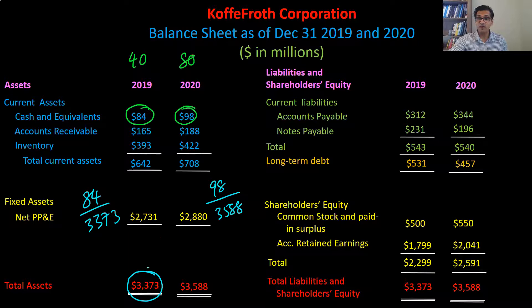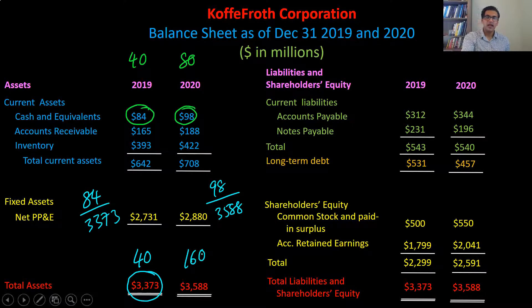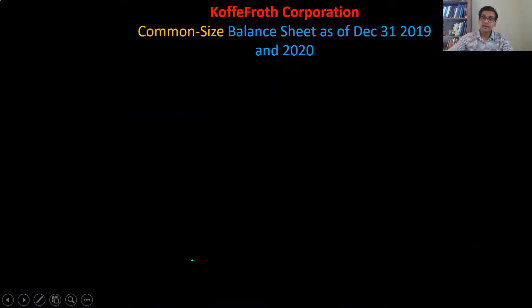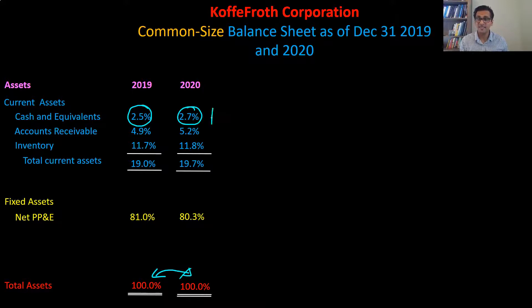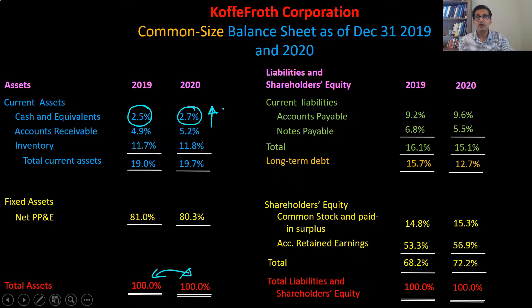Just like we divided 40 by the total number of points — which was 40 for the first test and 160 for the second — it's the same exact idea. And when we do that for each and every line item on the balance sheet, that gives us the common size balance sheet. Now the total assets are a common size of 100%, and you can compare 2.5% with 2.7% and say, for instance, that cash and cash equivalents are on the rise. That's the idea behind a common size balance sheet.